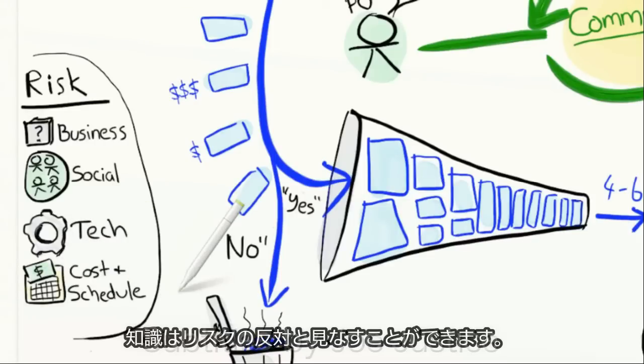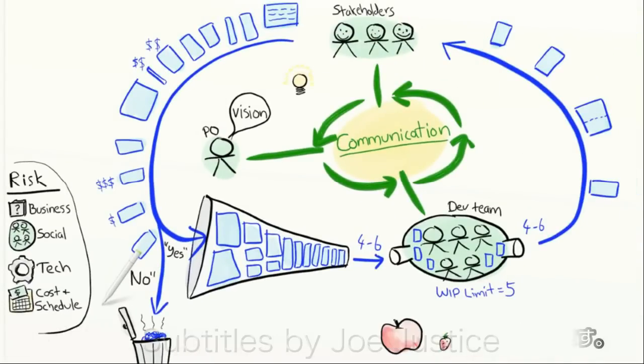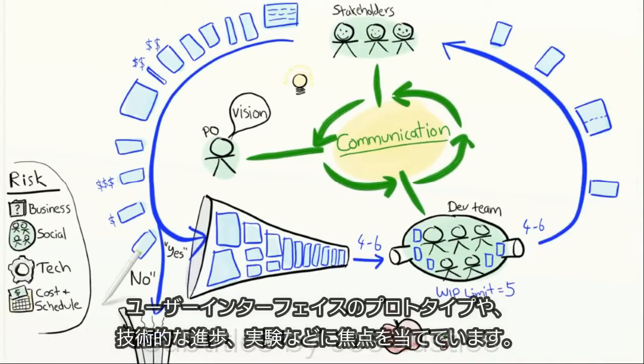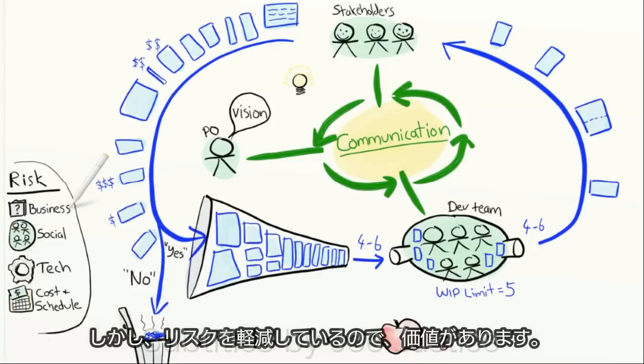Knowledge can be seen as the opposite of risk. So when uncertainty is high, our focus is knowledge acquisition. We focus on things like user interface prototypes and technical spikes or experiments. Maybe not too exciting for the customers, but still valuable because we are reducing risk.